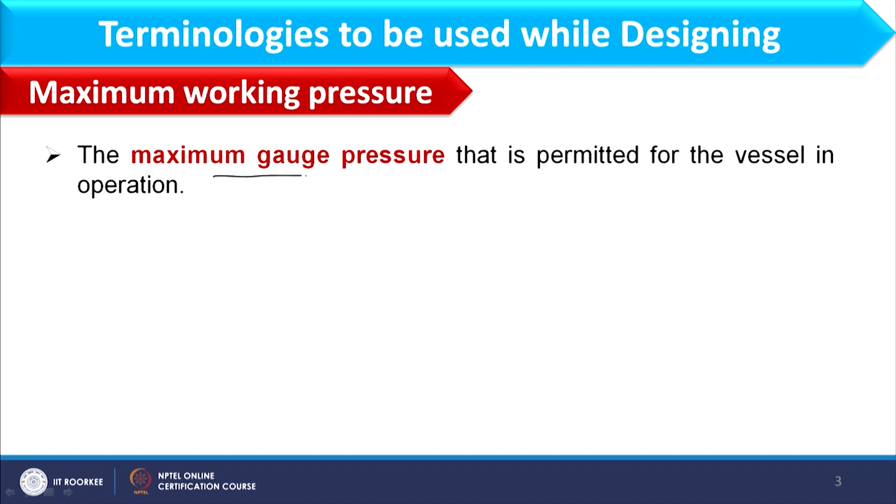Maximum working pressure is the maximum gauge pressure permitted for the vessel in operation. It is the maximum operating pressure, and that should be given in gauge. Why pressure is considered in gauge — that point we will discuss when we derive the expression for designing the pressure vessel. Maximum working pressure is that pressure which should never increase while in operation.